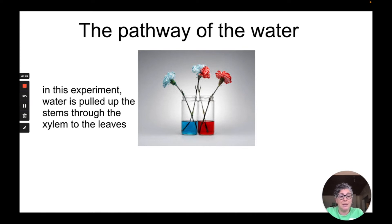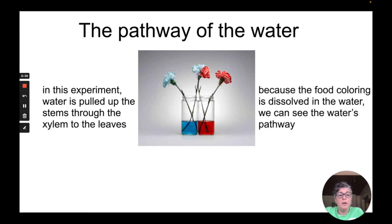This is another classic example of this type of experiment using white carnations to see how water moves up through the stem. Because the food coloring is dissolved molecules in the water we can actually see the water's pathway through the stem and into the vascular bundles of the leaves.